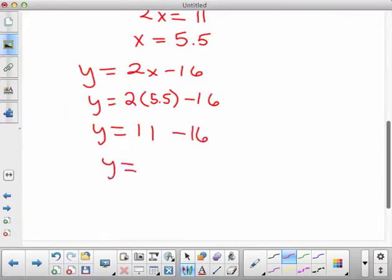And so y is equal to negative 5. And so when you graph these, we should get, unless I've made an error somewhere, 5.5 and negative 5.